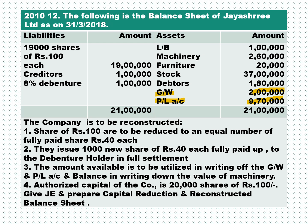The company is to be reconstructed. Shares of rupees 100 each are to be reduced to an equal number of fully paid shares of rupees 40 each. So a 100-rupee share is reduced to 40 rupees — that means the capital reduction per share is 60. I repeat: capital reduction is 60. Next, issue 1,000 new shares of rupees 40 each fully paid to the debenture holders in full settlement.